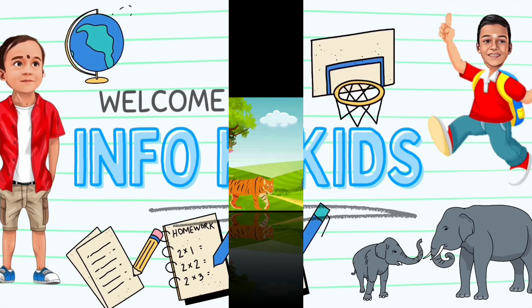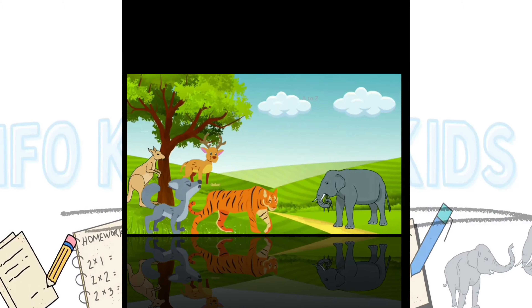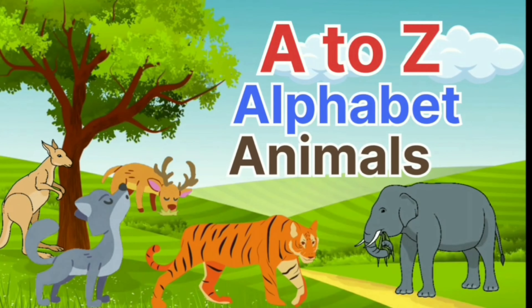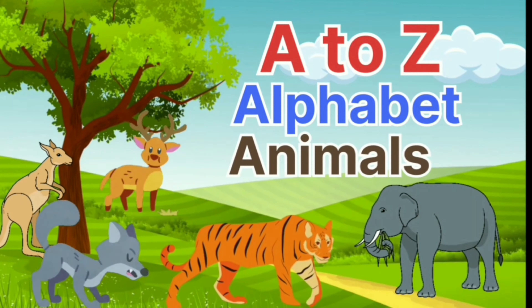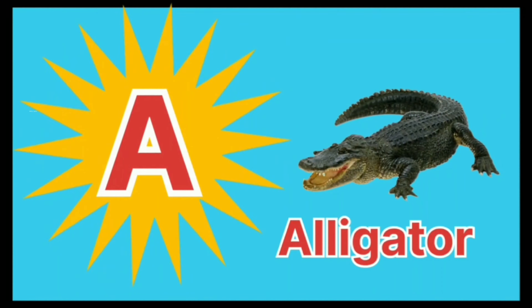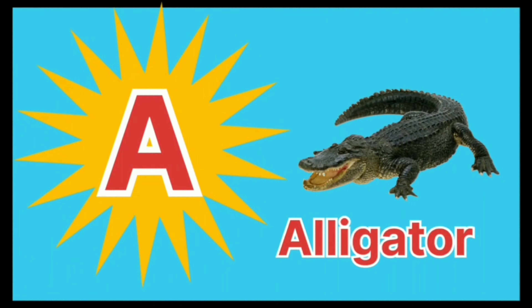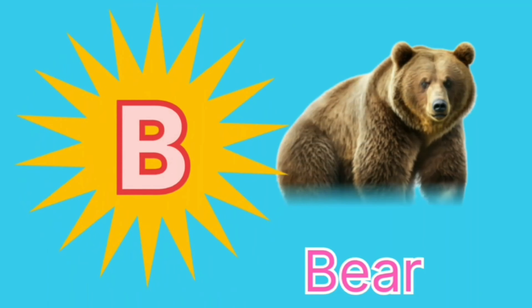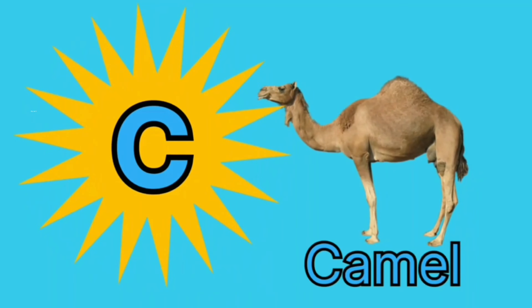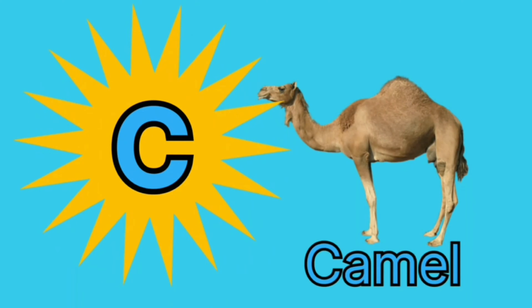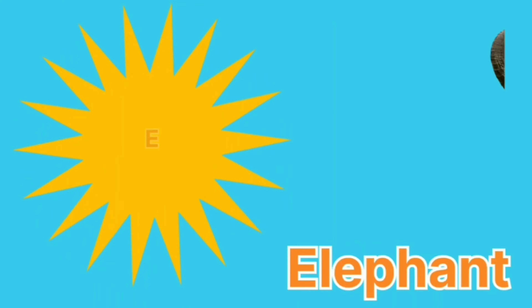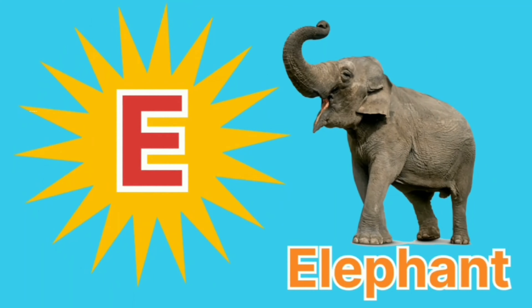A to Z alphabet animals. A for alligator, B for bear, C for camel, D for dog, E for elephant.